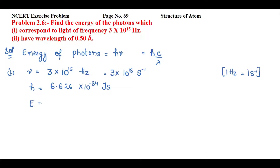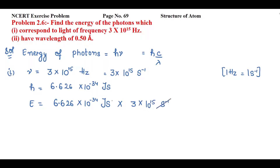Now put the values into E = hν: h = 6.626×10⁻³⁴ J·s multiplied by ν = 3×10¹⁵ s⁻¹. The s⁻¹ cancels with the seconds. Multiplying 6.626 by 3 gives 19.88, and adding the powers: 10^(−34+15) = 10^(−19). So we have 19.88×10⁻¹⁹ J, which needs to be converted to scientific notation.